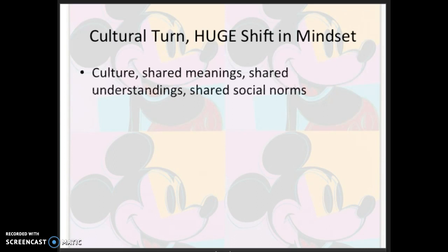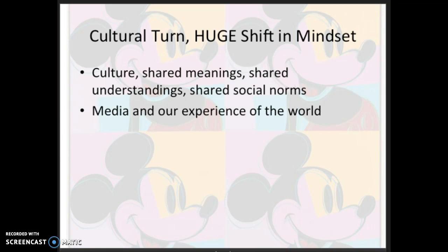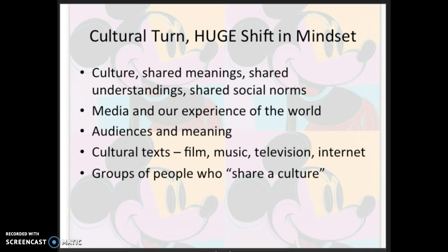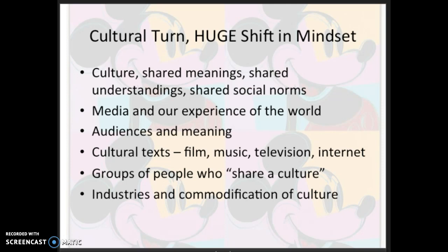These scholars were and are interested in how mediated mass culture might be influencing the ways we experience the world. They looked at audiences and how individuals make meaning from the media they consume. They looked at cultural texts — film, music, television, and later the internet — as important sources of meaning and identification with the social world. They were concerned with groups of people who share a culture, as in cultural studies scholars, as well as institutions, and — to quote Barron and Davis — how the culture industries turn culture into a commodity and sell it for profit. That's the tradition of political economy.